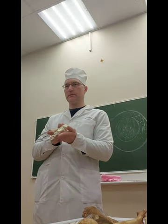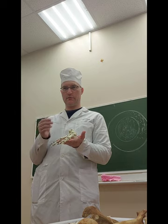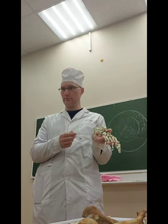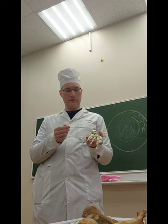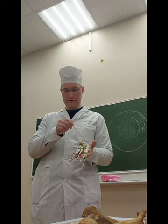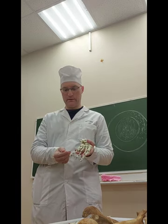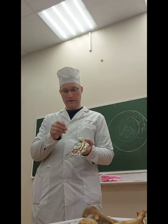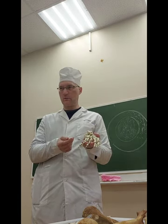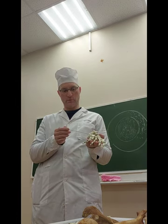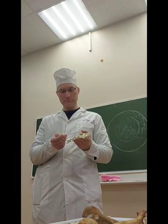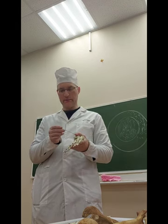Foot bones — foot in Latin is pes, ossa pedis. Like in the hand we have carpus and metacarpus; on the foot we have tarsus and metatarsus. All of this is tarsus. Tarsus, like carpus, consists of a proximal row — only two bones — and a distal row which has medial and lateral parts.